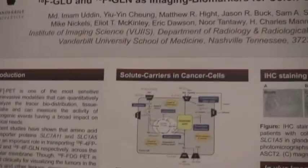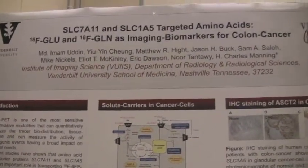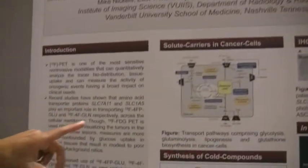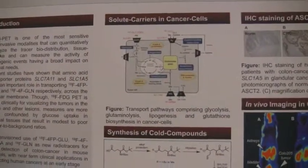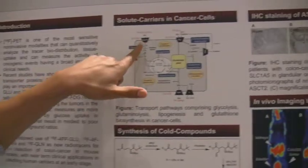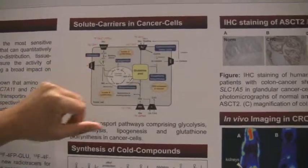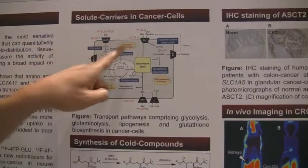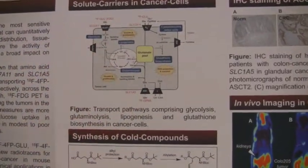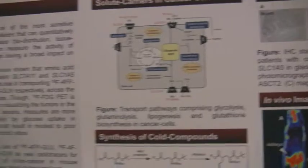PET imaging is extremely valuable for imaging cancer, especially. FDG is one of the tracers that uses the glucose transporter-1. There are two major other transporters, which are called SLC7A11 and SLC1A5, which are the glutamine and glutamate transporters. These two transporters we focus on as a marker of cancer using fluorinated compounds, fluorinated glutamine and fluorinated glutamate.